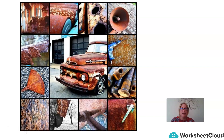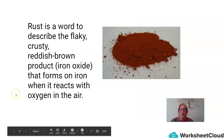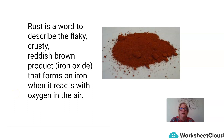I would like you to take a moment and have a look at these images in front of you. What are the similarities between these images? The first word that jumped to my mind was rust. Rust is a word to describe the flaky, crusty, reddish-brown product, known as iron oxide, that forms on iron when it reacts with oxygen in the air.